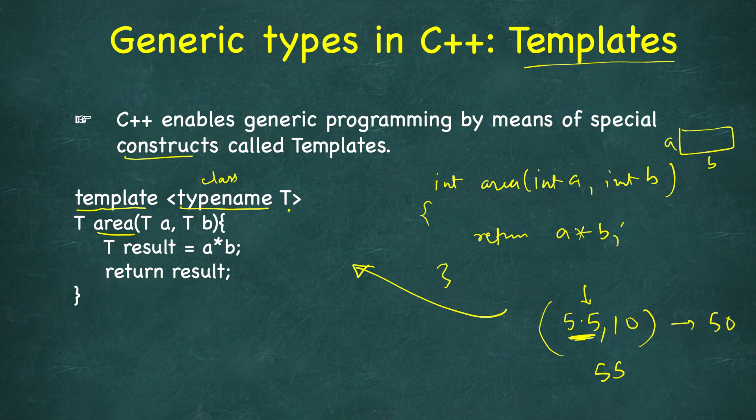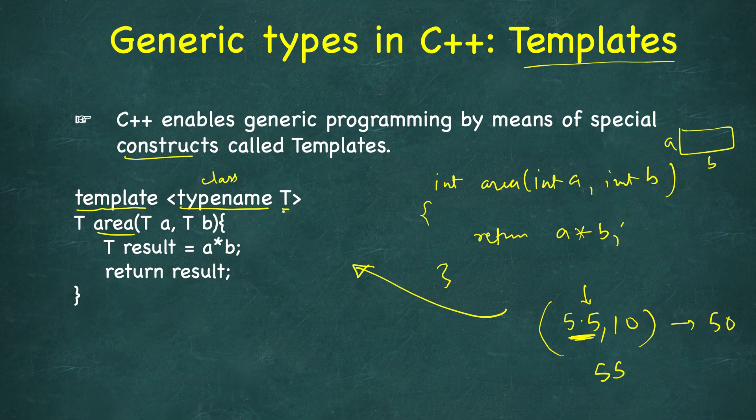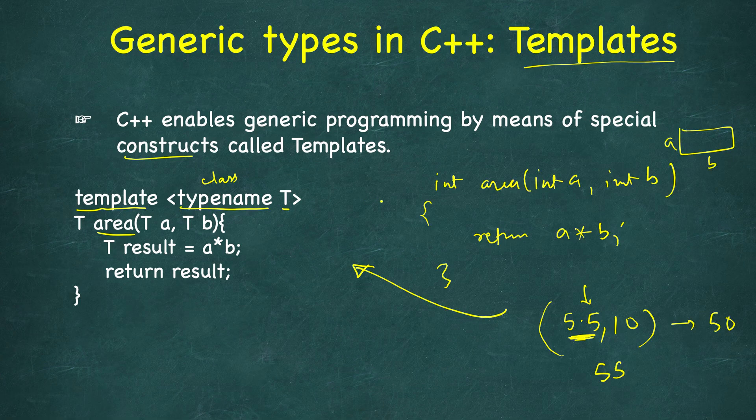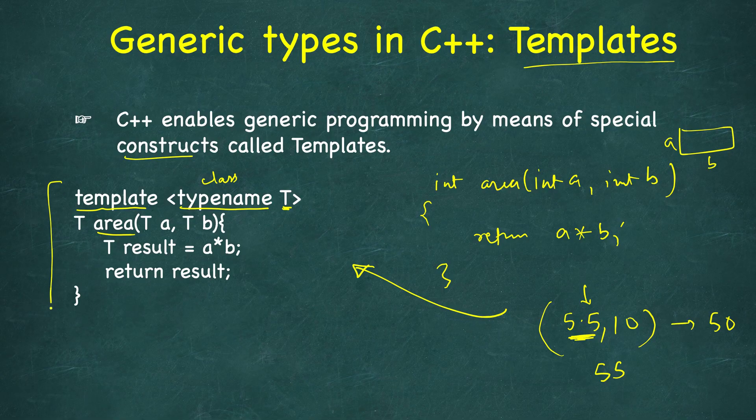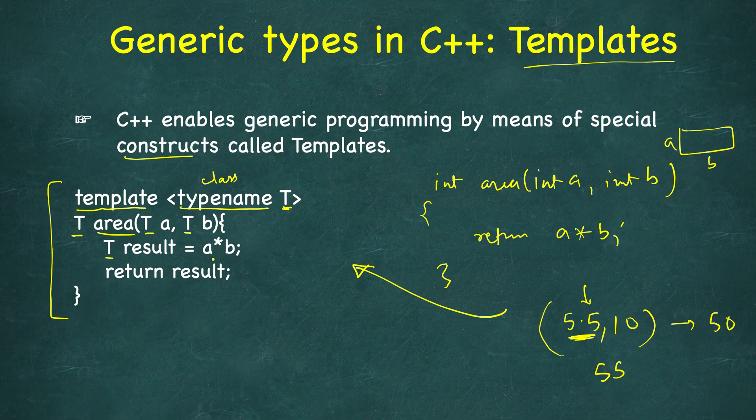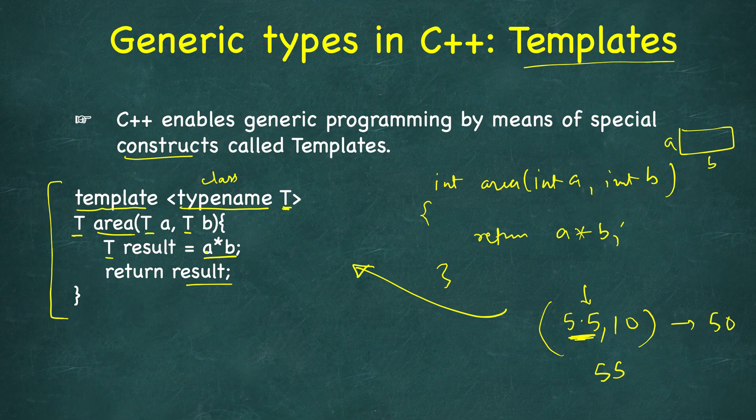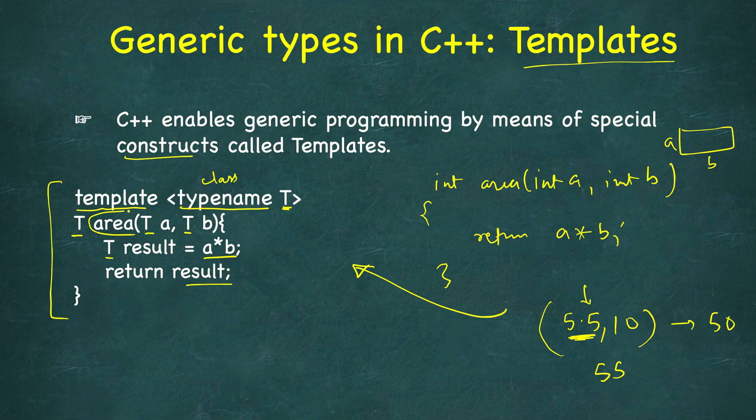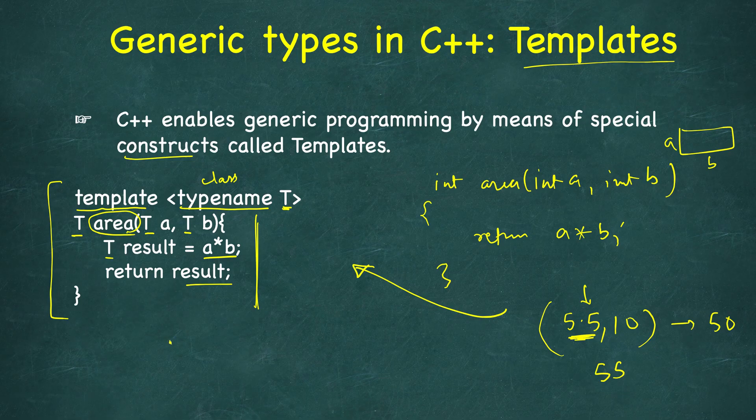T is a generic type and our implementation is based on this generic type. So return type is T and it takes two parameters of type T. Then we have T result = a multiplied by b, then return result. It should be rather area_rect rather than simply area.